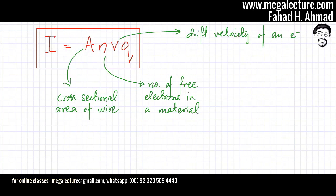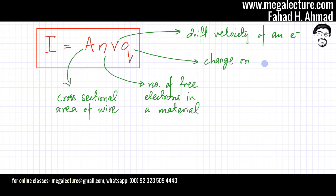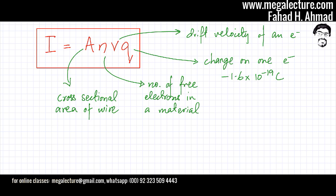So, drift velocity of an electron. And finally, Q is going to be the charge on one electron, which is 1.6 × 10⁻¹⁹ coulombs, and it's going to be a negative charge. That's the value of Q.